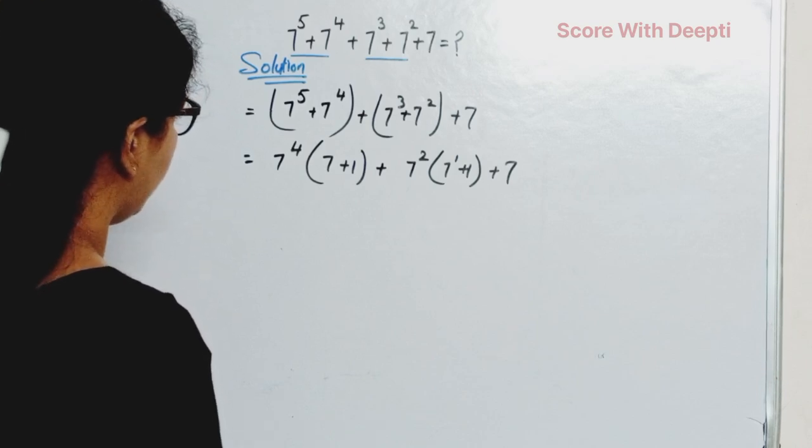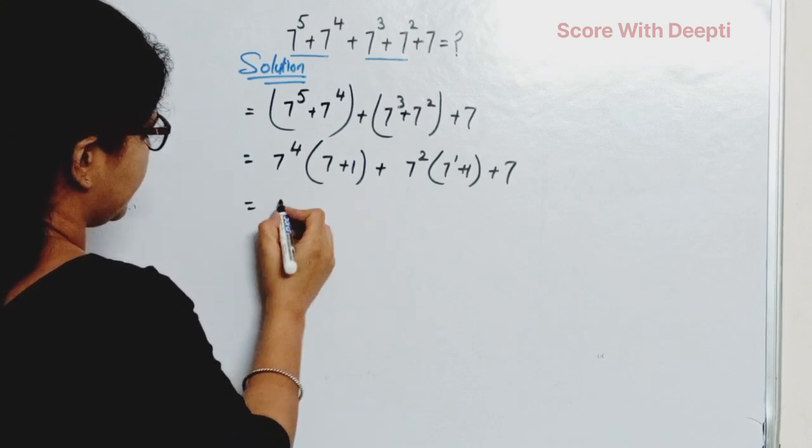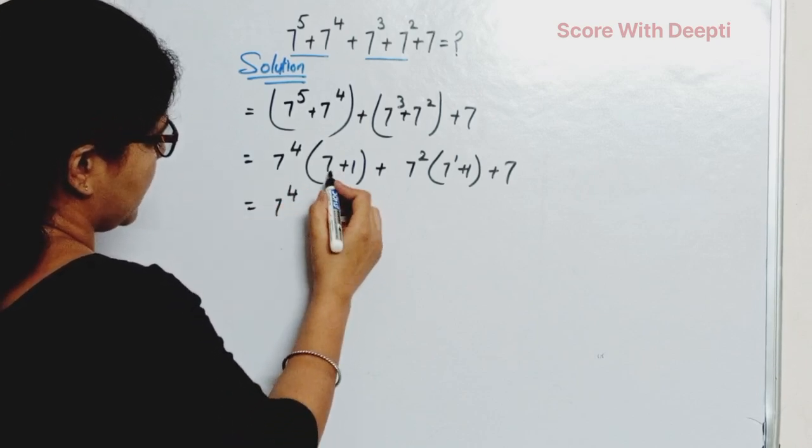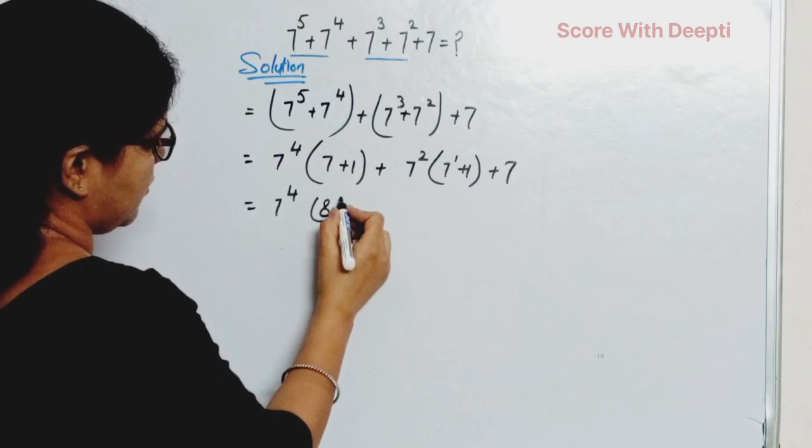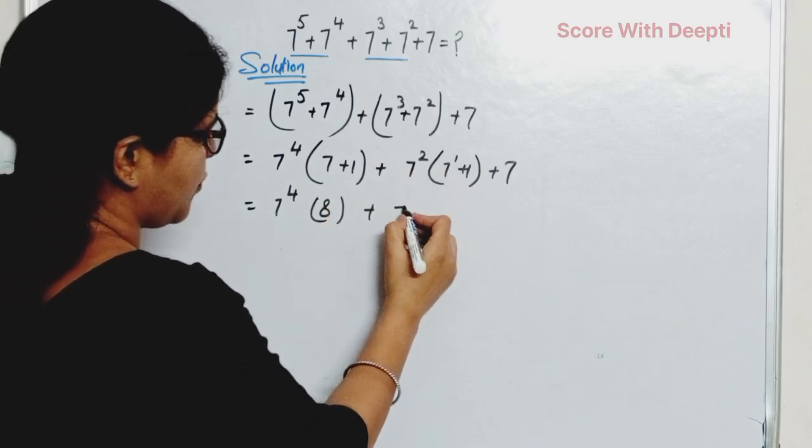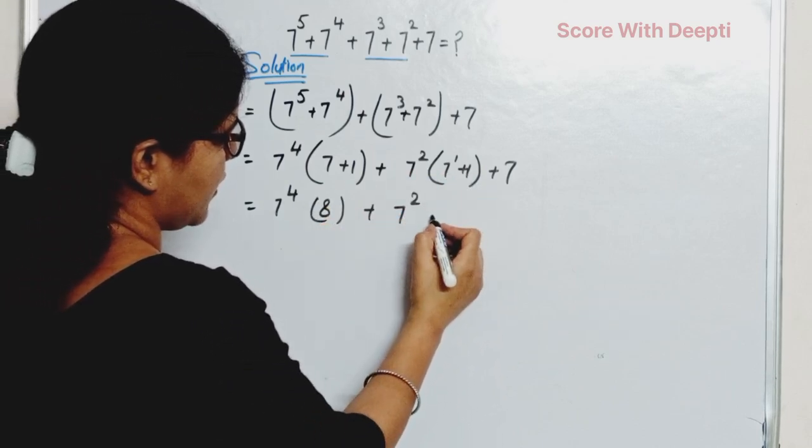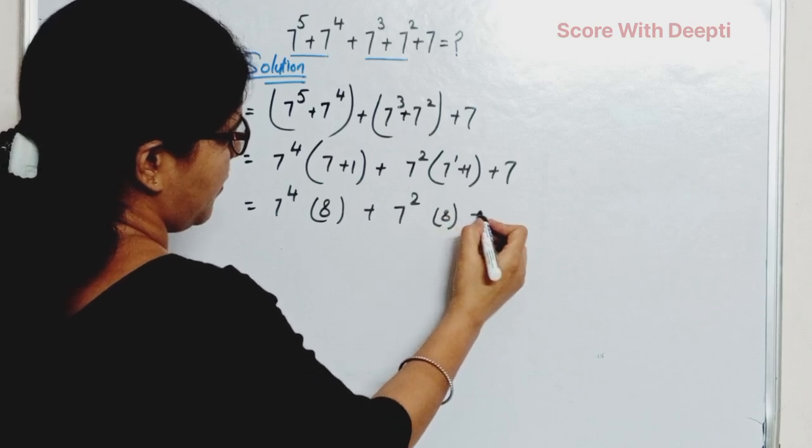Next, we solve this and get 7^4 * (7 + 1) = 7^4 * 8 plus 7^2 * (7 + 1) = 7^2 * 8 plus 7.